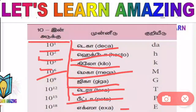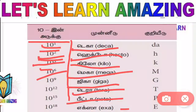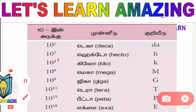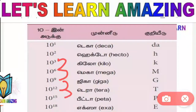So the second one is continuity. 10 power 1 is the first, 10 power 2 is the second, 10 power 3 is the third. The third values are 6, 9, 12, 15.